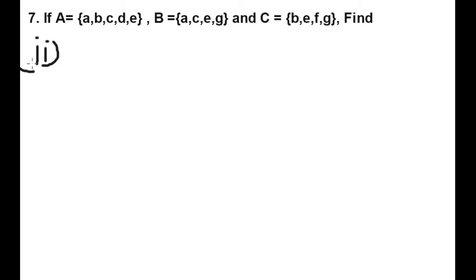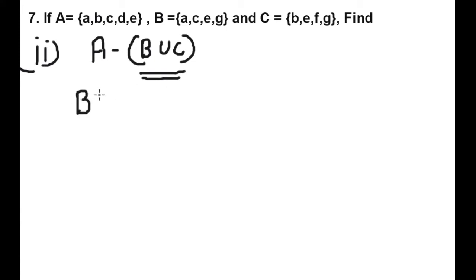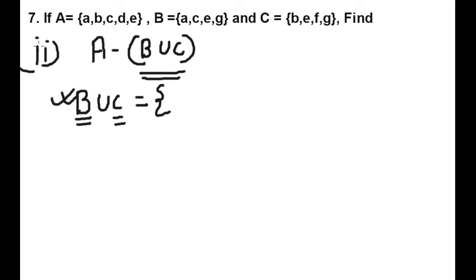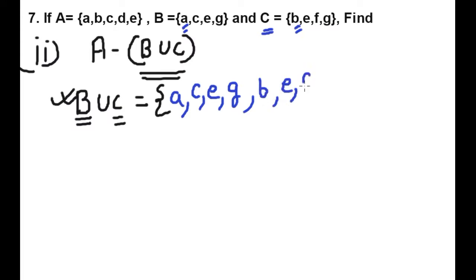Question number 2 is A minus (B union C). So first we will find B union C. B union C means we have to write all the elements of B and C, each element only one time — we will not repeat any element. Elements of B are: A, C, E, G. Now elements of C: B, E, F, G.